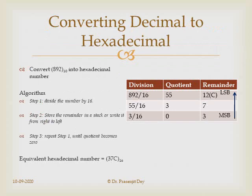To convert a decimal number to hexadecimal, it is similar to decimal-to-binary conversion but we divide by 16. For decimal 892: 892 ÷ 16 = quotient 55 remainder C; 55 ÷ 16 = quotient 3 remainder 7; 3 ÷ 16 = quotient 0 remainder 3. When the quotient becomes 0 we stop. Remainders are stored in a stack, so the last-generated remainder is printed first, giving the hexadecimal representation 37C.